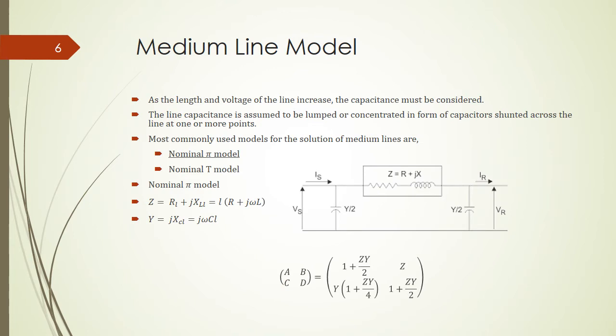For the medium line, we cannot neglect the capacitance anymore. The capacitance is assumed to be lumped or concentrated in form of capacitors and is put in some points of the line. Depending on where we put the capacitors, we can have nominal pi model or nominal T model. In this lecture, we just focus on nominal pi model.